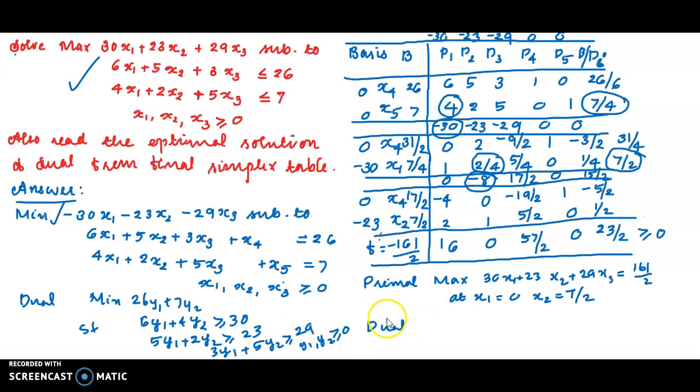That is why we do dual. Then primal maximum value, dual minimum value is equal to minimum value. Primal optimal and dual optimal is equal to the same. Minimum of 26y₁ plus 7y₂. The total value is equal to 161 by 2. x₄ and x₅ is corresponding to net evaluations in the optimal stage.